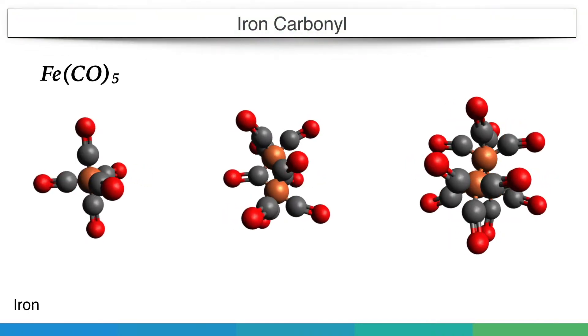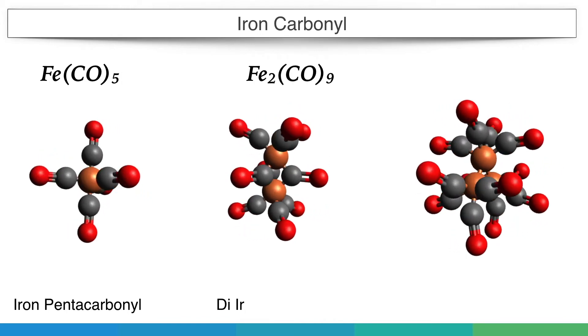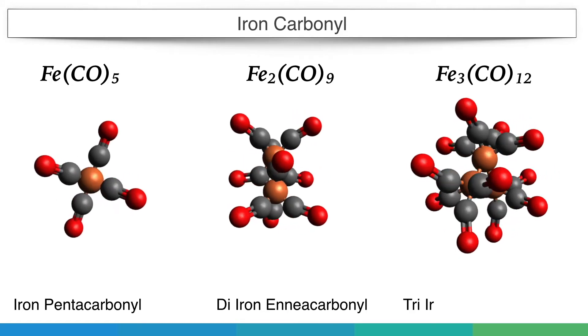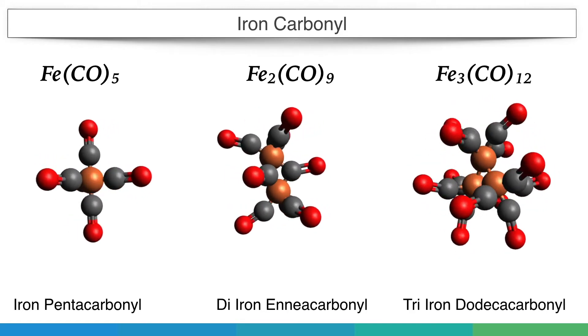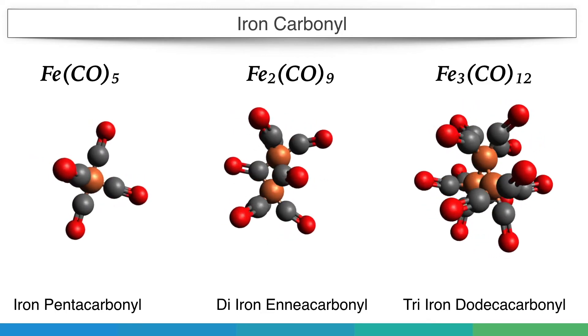Structure and properties of iron carbonyls. Iron forms three different types of bonding with carbon monoxide, producing three carbonyls. These are iron pentacarbonyl, di-iron enneacarbonyl, and tri-iron dodecacarbonyl. Let's discuss all three in detail.